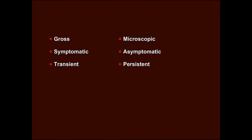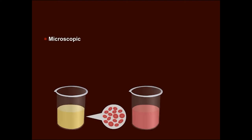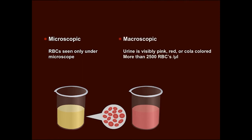Hematuria can be gross or microscopic, symptomatic or asymptomatic, transient or persistent, isolated or associated with proteinuria and other urinary abnormalities. Hematuria is described as microscopic when red blood cells are seen only under the microscope, macroscopic when the urine is visibly pink, red or cola color, indicating that more than 2,500 RBCs are present per microliter of urine specimen.